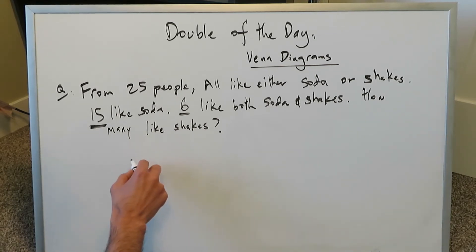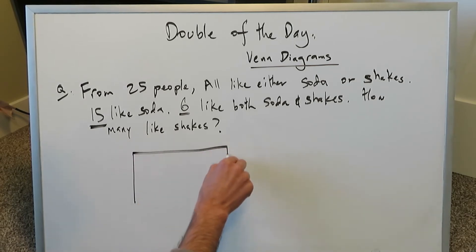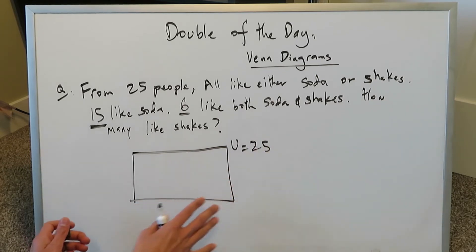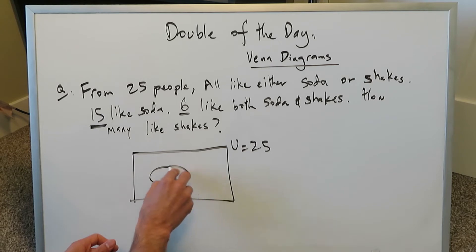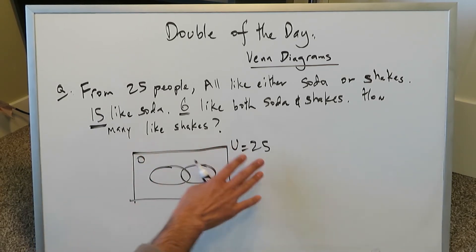Not too hard. Start over here with a universal set and you can represent that as a rectangle. Your total here is 25 people who all like either soda or milkshakes. There's nothing mentioned about people who don't like any of these, so that value right there is 0. Everyone within this 25 falls in these two categories: one is soda, S for soda, and the other is milkshakes, M for that.